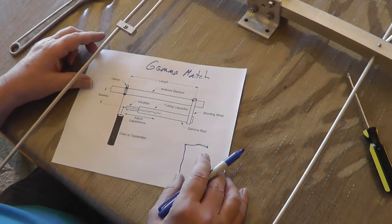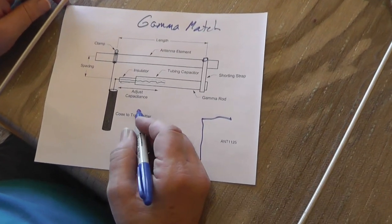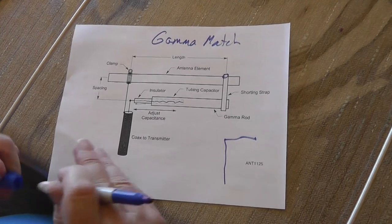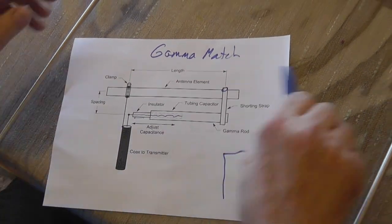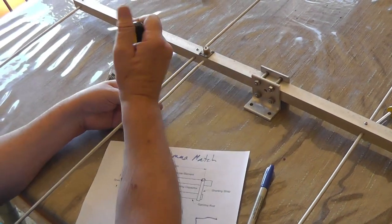So it is very much like a balun in the sense that it changes it from unbalanced to balanced. Now, if we look at what is in here, we see the center conductor here.